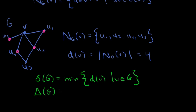And similarly, the maximum degree is going to look very similar to this. It's just going to be the maximum over that set. d of v and v as in G.